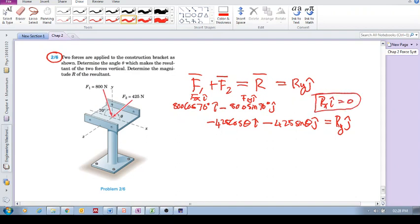So now let's group like terms. Let's look at what's happening in the X direction. We can say 800 cos of 70 degrees, and then this one is also in here, so it's minus 425 cos theta is equal to zero. Does that make sense? So the X component here plus the X component here is equal to the X component here. And the X component is zero.